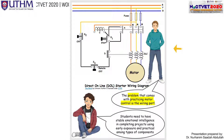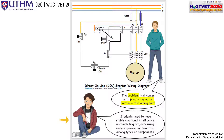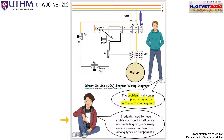Look here — you can see all the components and all the wires. The problem that comes with practicing motor control is the wiring part, because it has two types: the first one is the control circuit, and then the main circuit. Therefore, students need to have stable emotional intelligence in completing projects using early exposure and practical experience among types of components. That's why we made this game — so that students will learn the wires and components first, and then try to do it inside the game.